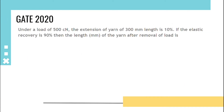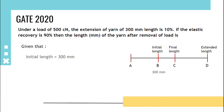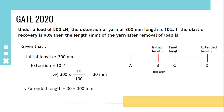Under a load of 500 centi-newton, the extension of a 300 millimeter length is 10 percent. If the elastic recovery is 90 percent, then the length of the yarn after removal of load is asked. Let AB be the initial length of the yarn, BD be the extended length, and C will be the final length after the removal of load. Initial length is 300 mm; extension is 10%, that is 30 mm, so extended length will be 330 millimeter.